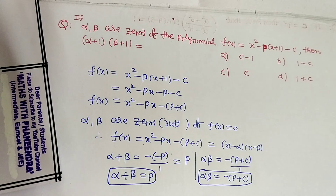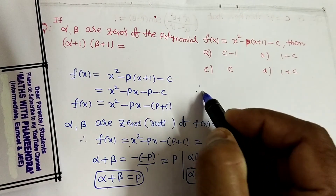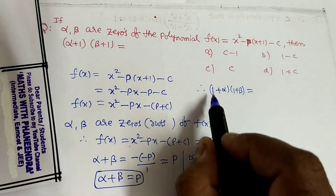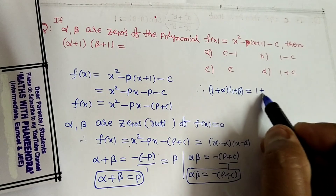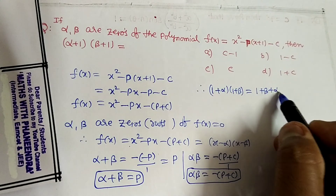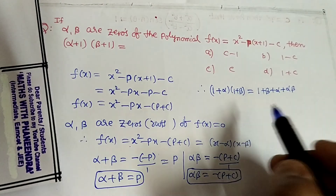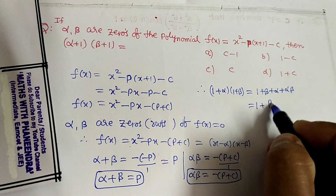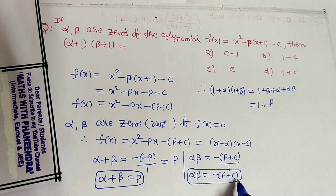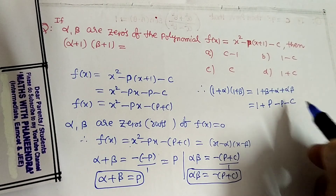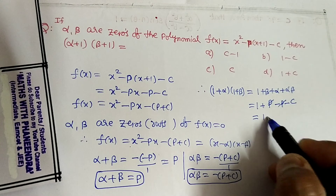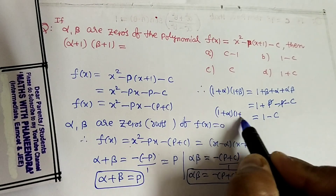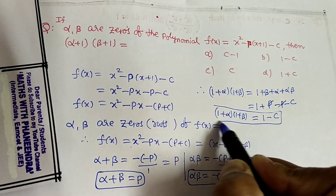After reaching this step, we calculate the required expression 1 plus alpha into 1 plus beta. Expanding: 1 into 1 is 1, plus 1 into beta, plus alpha, plus alpha beta. This gives 1 plus alpha plus beta plus alpha beta. Substituting alpha plus beta equals p and alpha beta equals minus of p plus c, which is minus p minus c, the p terms cancel, leaving 1 minus c. Therefore, 1 plus alpha into 1 plus beta is equal to 1 minus c.